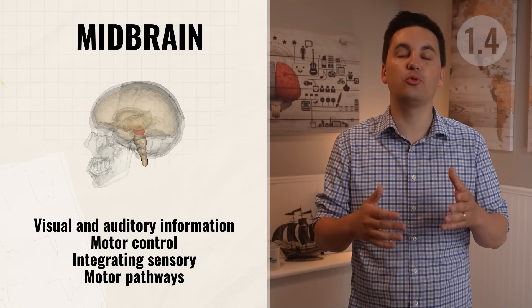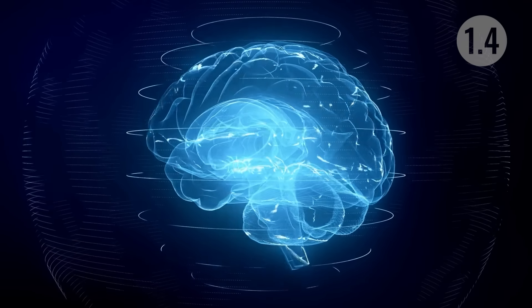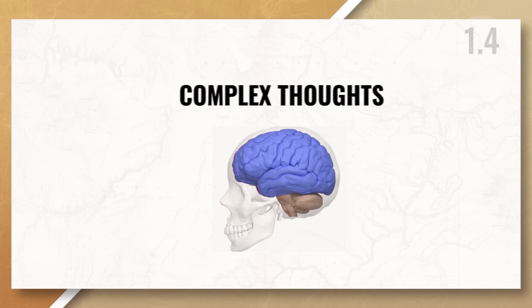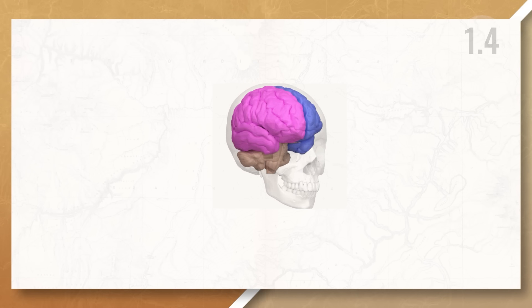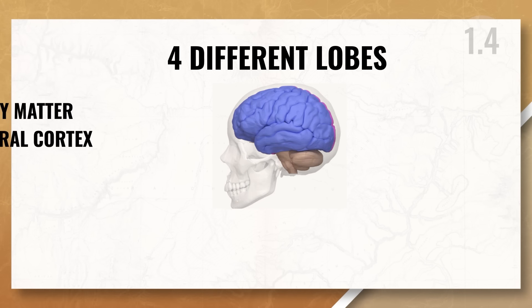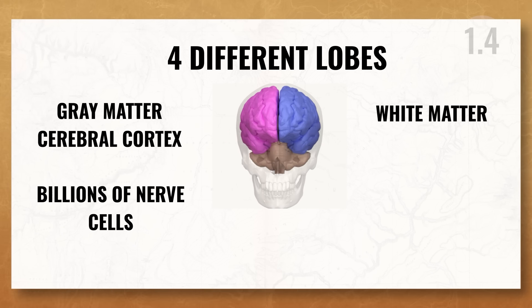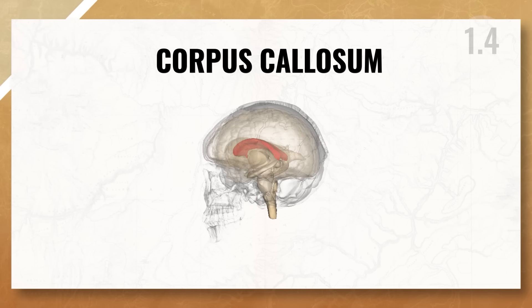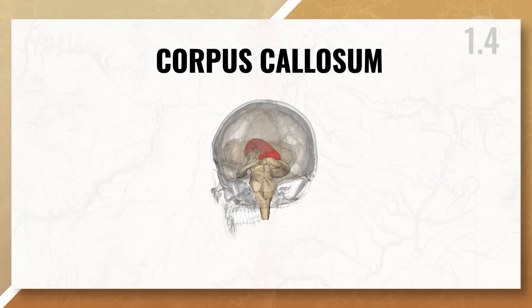The midbrain helps with processing visual and auditory information, motor control, and integrating sensory and motor pathways. Now let's talk about the forebrain. When picturing the brain, you're most likely thinking of the cerebrum, the largest part of the brain, which deals with complex thoughts. The cerebrum can be divided into two hemispheres — left and right — each further subdivided into four lobes. The cerebrum is made up of the cerebral cortex (gray matter) and white matter. Beneath the cerebral cortex is the corpus callosum, a thick band of nerve fibers that connects the two hemispheres and allows them to communicate.